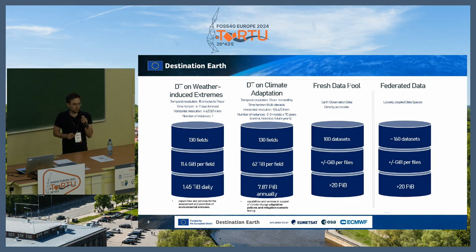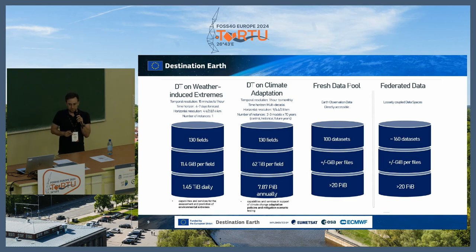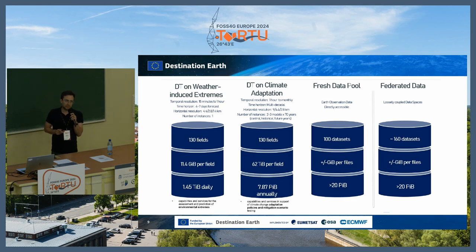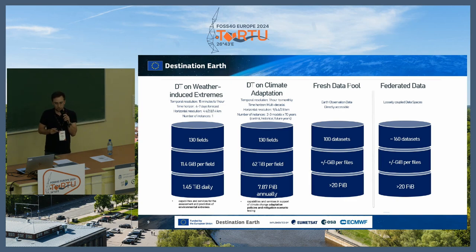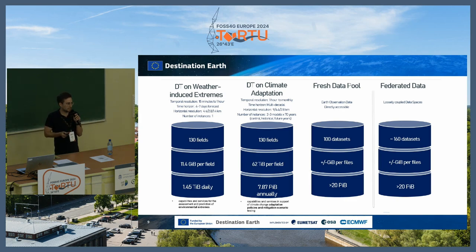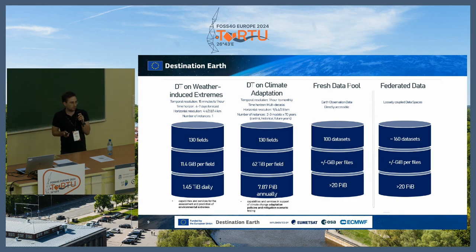A few words about storage: Extreme DT output generates about 1.5 terabytes of data daily. Climate DT is harder to quantify daily, but annually it takes about 8 petabytes of storage. The Fresh Data Pool is now more than 50 petabytes, and federated data is also well over 50 petabytes.